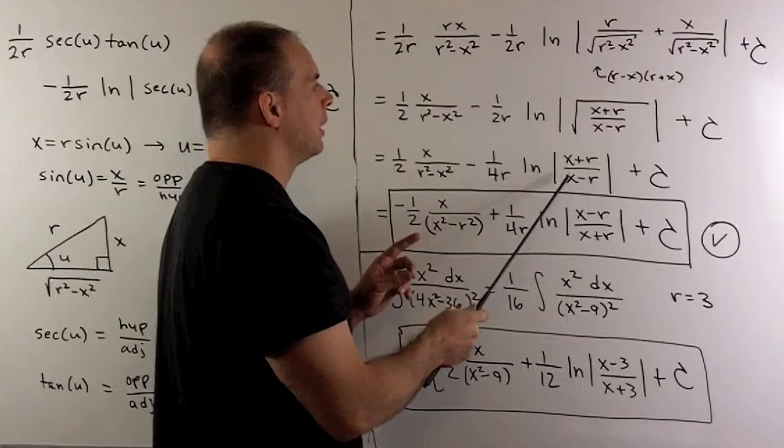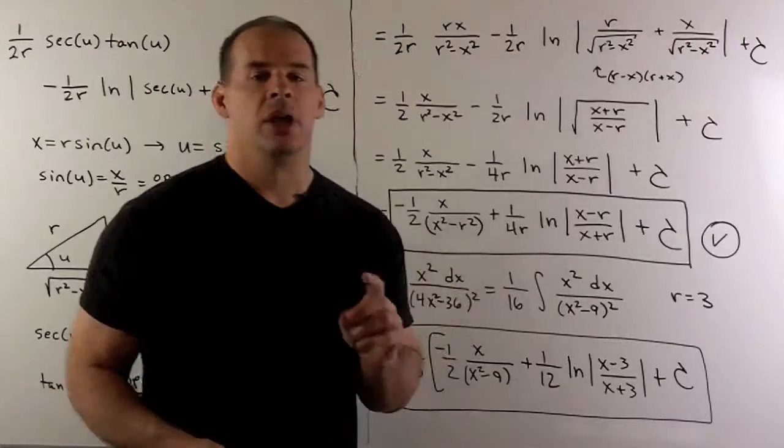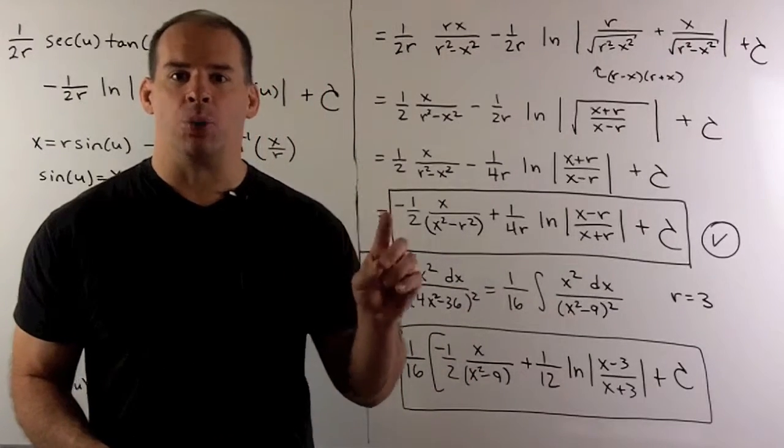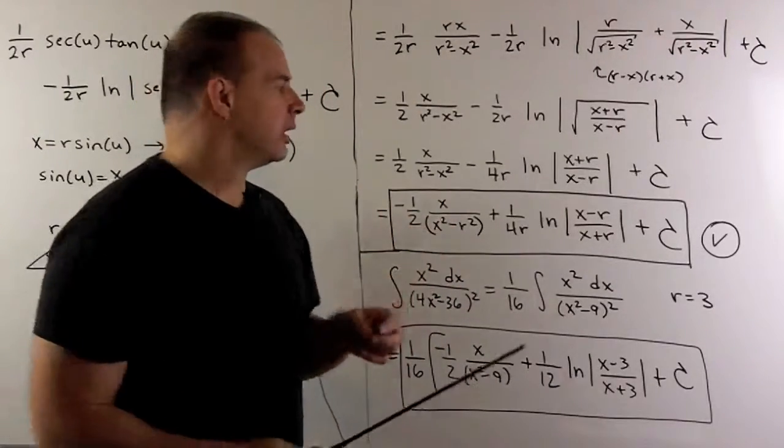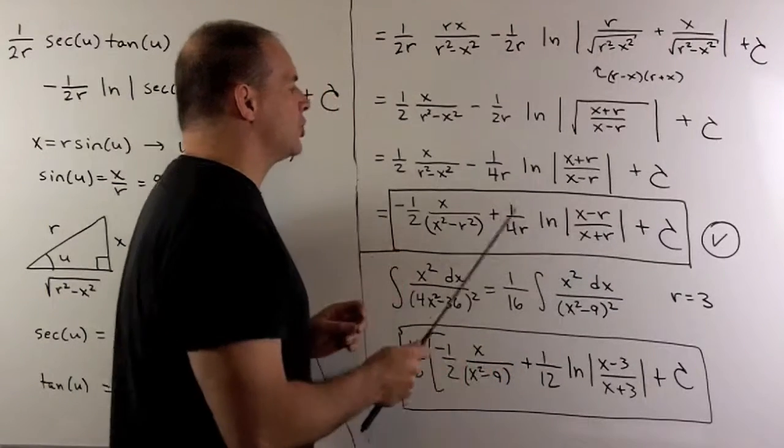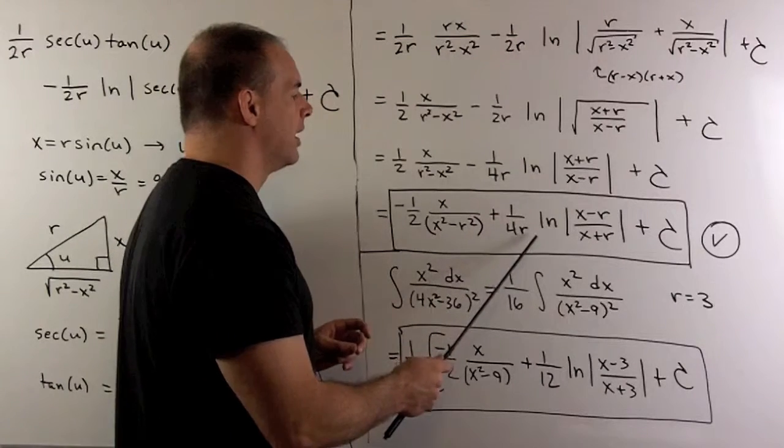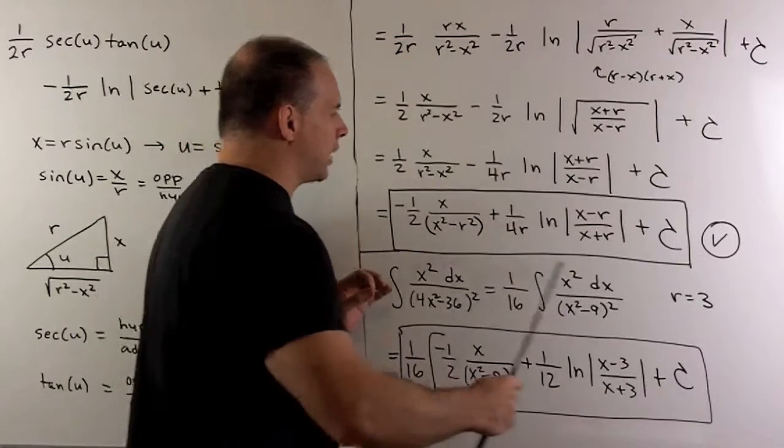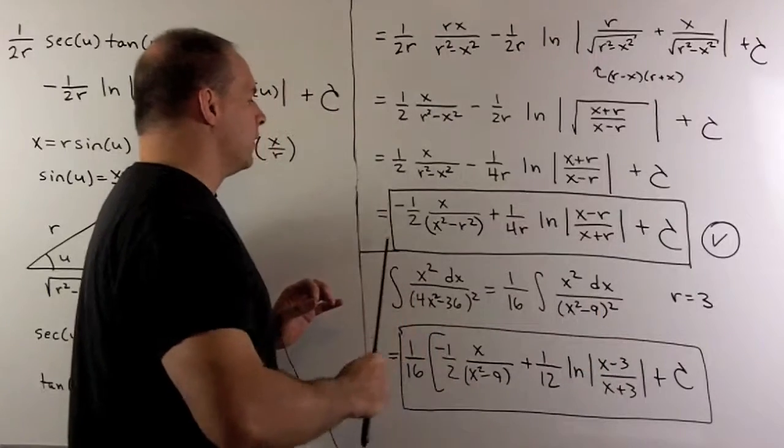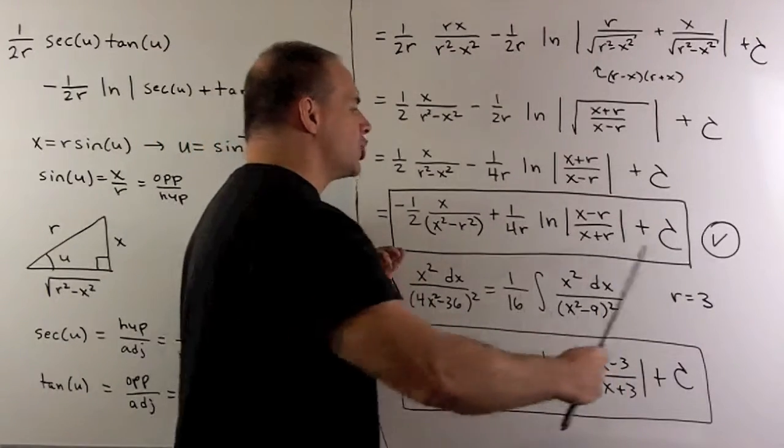Finally, I want to switch the position of the x plus r and the x minus r. So, that's introducing an exponent of minus 1 to switch. So, I'm going to have x minus r over x plus r. But the penalty is to change from minus 1/4 r to plus 1/4 r. Then, if you go check the previous video, this is going to match what we got before. So, that's going to be the check on our work.